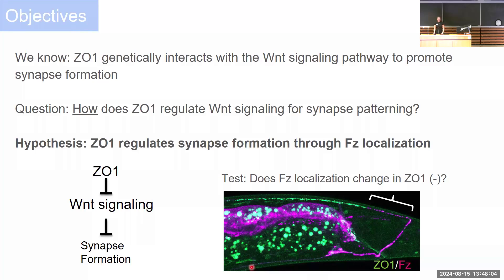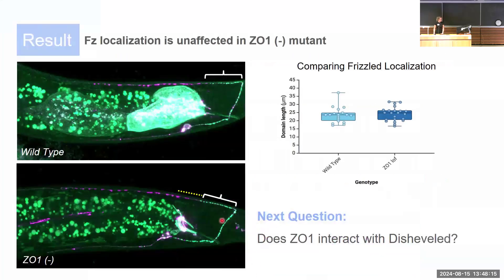This led us to hypothesize that ZO1 regulates synapse formation through Frizzled localization. To test this, we compared Frizzled localization between wild-type and ZO1 mutants, and found that Frizzled localization looks similar between wild-type and ZO1 mutants, so we cannot conclude that ZO1 is regulating Frizzled localization. Our next question is whether ZO1 interacts with the downstream component of the Wnt signaling pathway, Disheveled. Come to poster number 10 to learn more. Thank you.